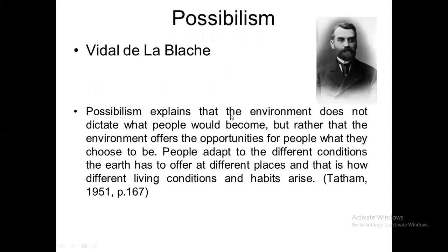Now we come to Possibilism. The first name is Vidal de la Blache, a French thinker. He talks about how the natural environment offers opportunities for people, but people choose how to adapt to the different conditions the earth offers at different places — and that is how different living conditions and habitats arise. This relates to the modern human species, Homo sapiens, where 'sapiens' means reasoning. Man has the capability of thinking and making decisions, not just following instinct.